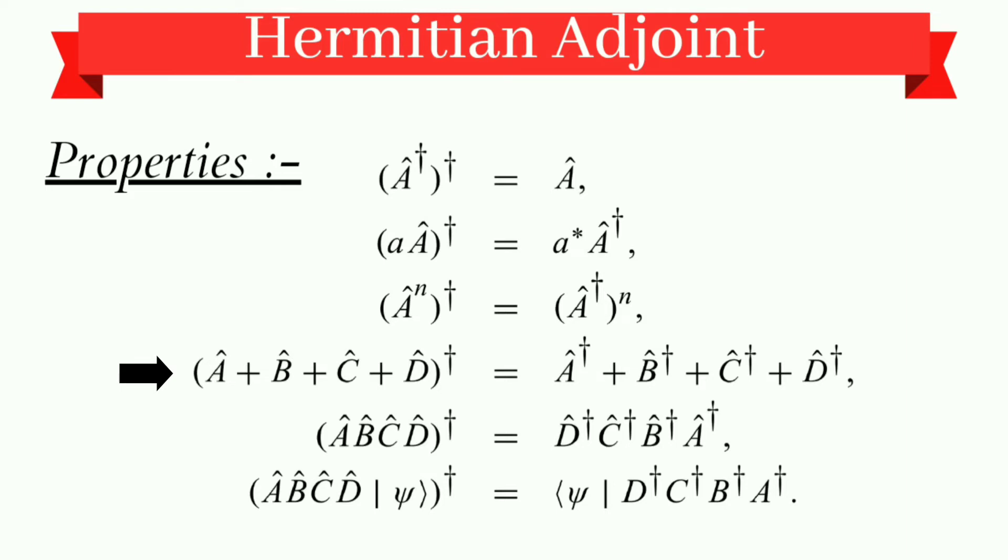Now, if we look at the addition property, if we add operators and take its adjoint like A plus B plus C plus D whole dagger, it will give us A dagger plus B dagger plus C dagger plus D dagger.